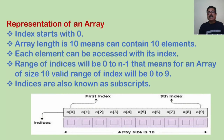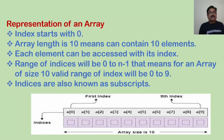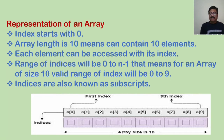This is the representation of an array. Array A has a length of 10; the index starts with 0, meaning it can contain 10 elements. Each element can be accessed with its index. The range of indices will always be 0 to n minus 1 — so if there are n elements, the valid index range will be 0 to 9. Indices are also known as subscripts. The single reference has been divided into 10 different memory locations.